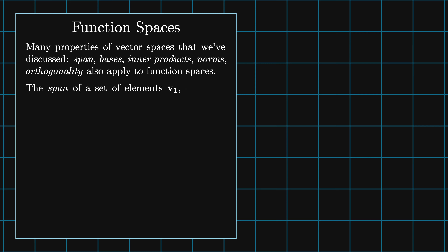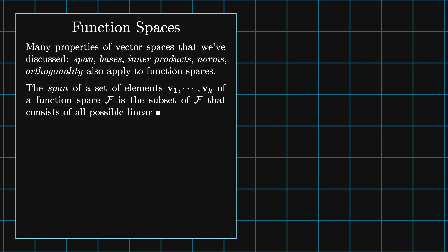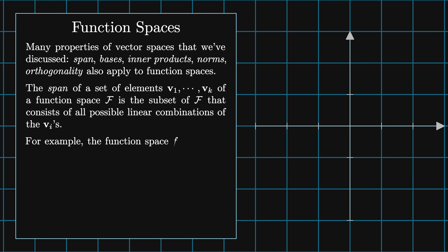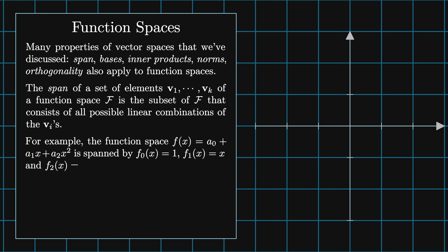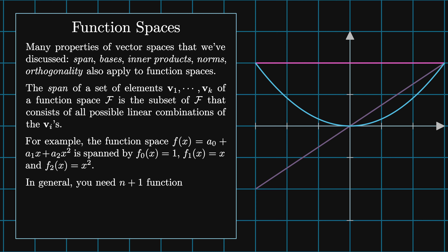The span of a set of elements v1 through vk of a function space f is the subset of f that consists of all possible linear combinations of the vi's. For example, the function space whose elements are a0 plus a1 times x plus a2 times x squared is spanned by f0 of x equals 1, f1 of x equals x, and f2 of x equals x squared. In general, you need n plus 1 functions 1, x, x squared through x to the n to span the space of polynomials of degree less than or equal to n.